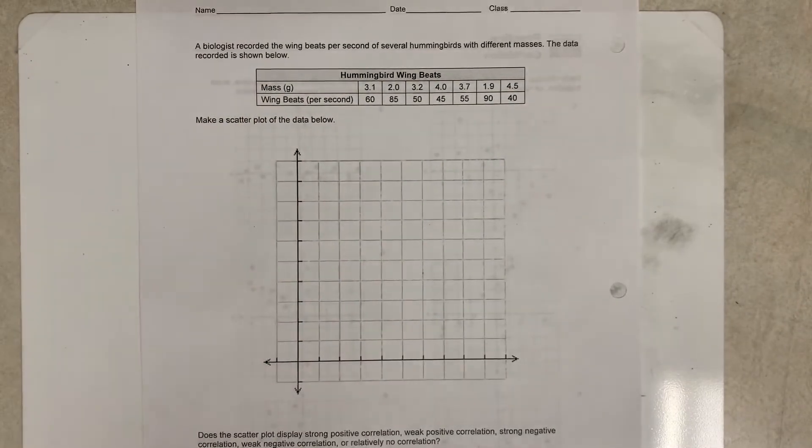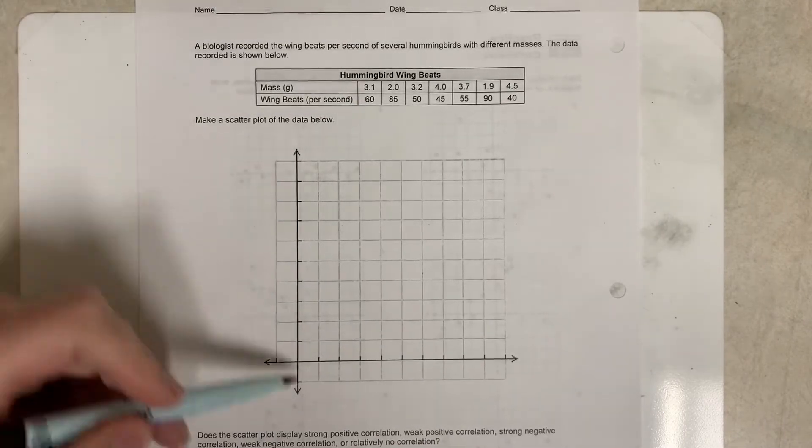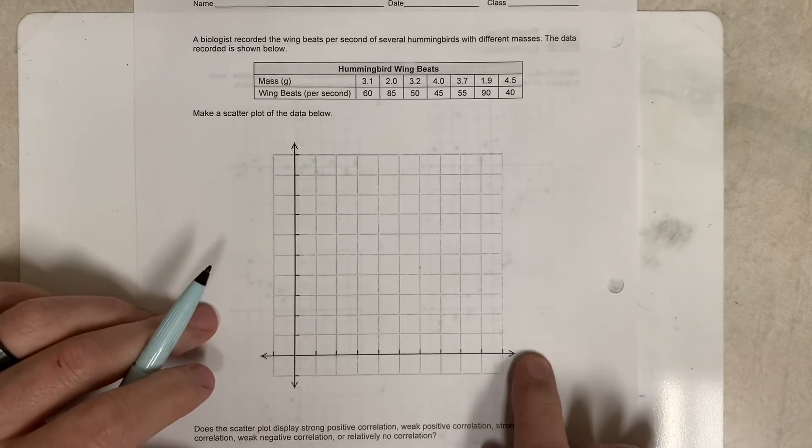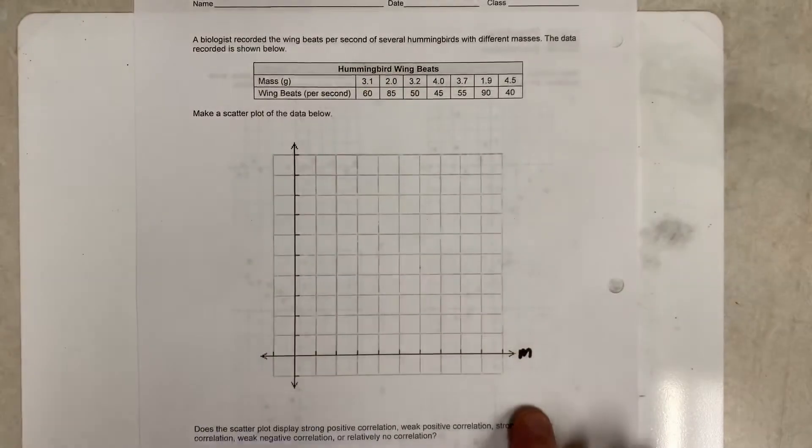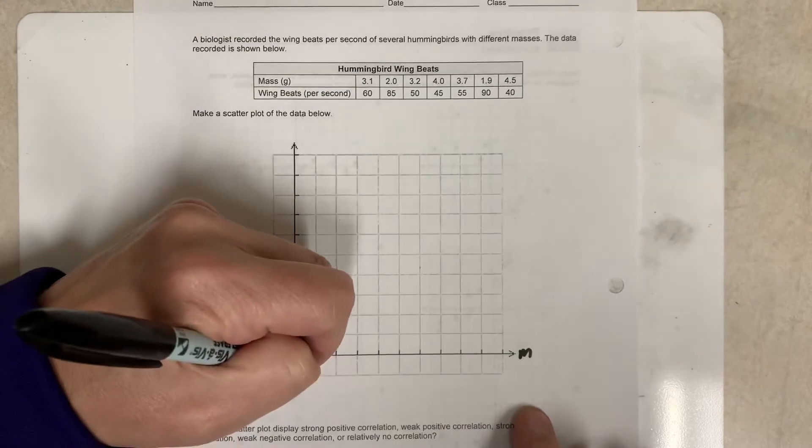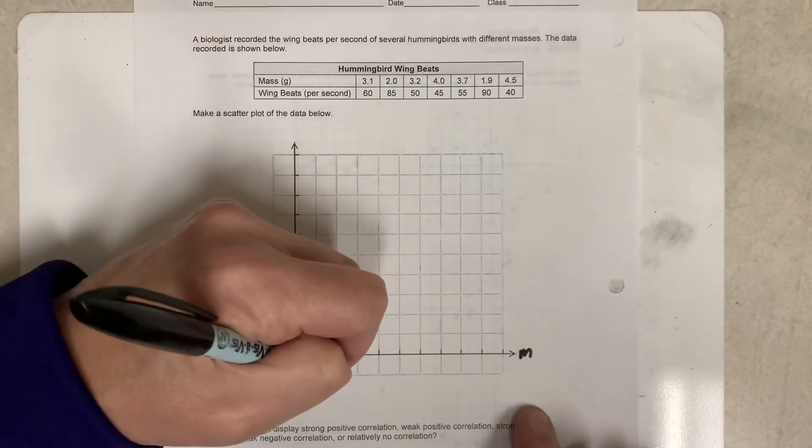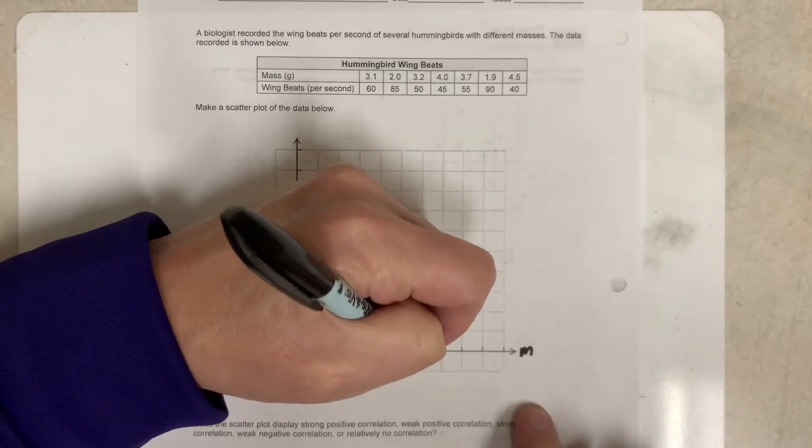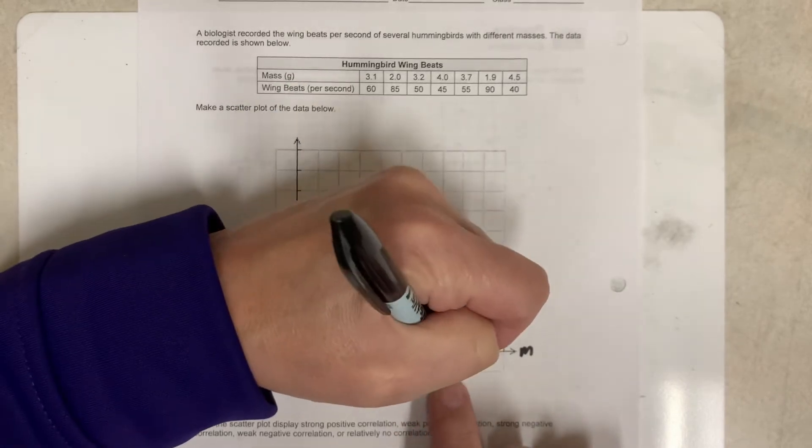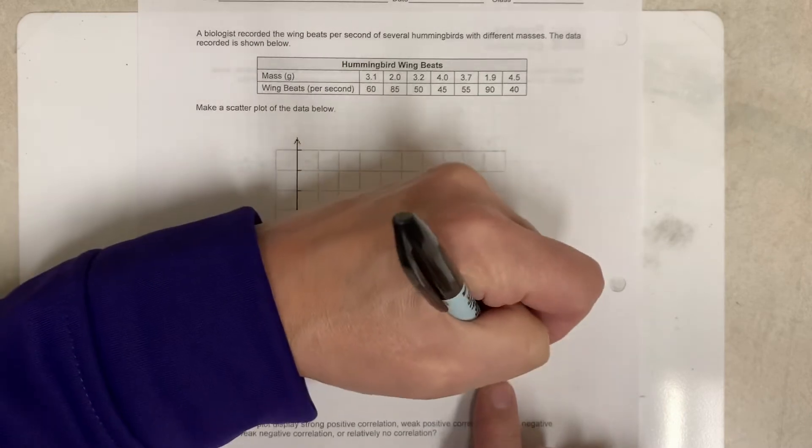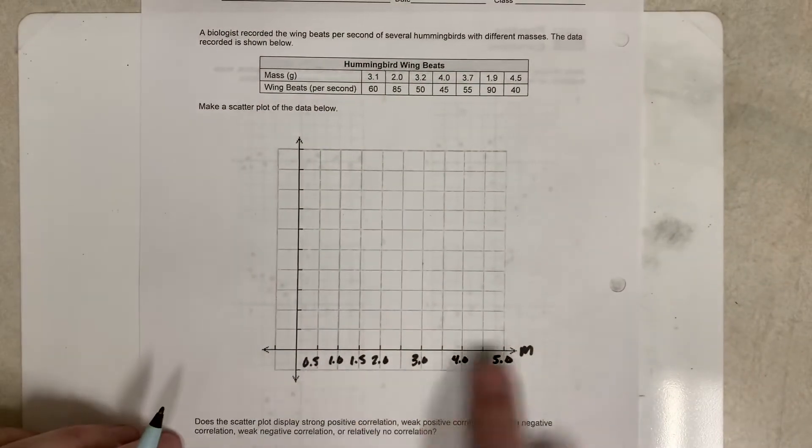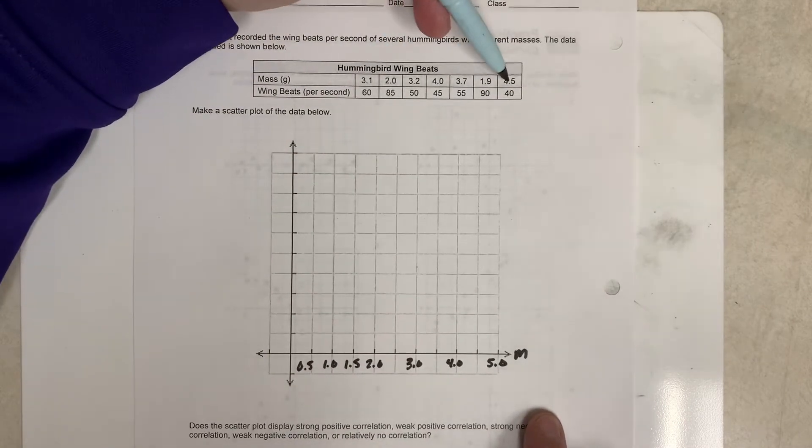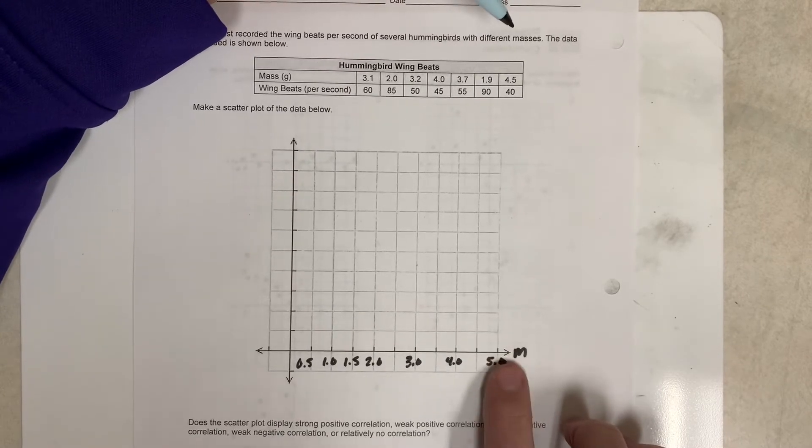It says to make a scatter plot of the data below. So on our scatter plot, we have nothing labeled on the axis, so we need to do that first. So what we might want to do is have this axis, which is going to be mass, we might want that one to go by maybe 0.5. So 0.5, 1.0, 1.5, 2.0, then 2.5, 3.0, I'll skip one, 3.5, 4.0, 4.5, 5.0. So why I go from 0.5 to 5.0—why am I going by 0.5 every time? Well, if I look at my masses, the biggest one is 4.5, so I'm definitely going to be a little bit shy of 5.0. I want to fit them all on my graph, and so that's why I went by 0.5 this time.